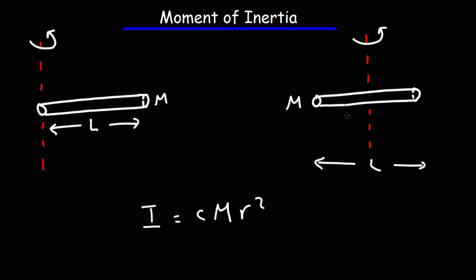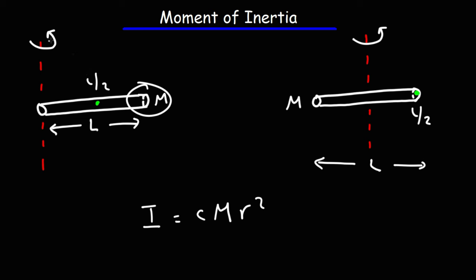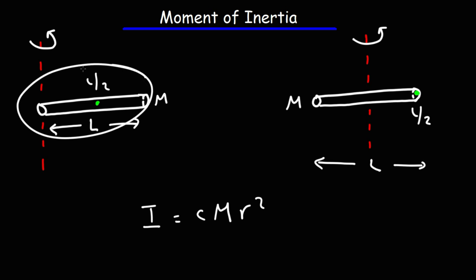If we look at the slender rod on the right, there's no mass beyond L over 2, or half the length of the slender rod. But if we look at the rod on the left, about half the mass is beyond the L over 2 position. So we have more mass that's further away from the axis of rotation.